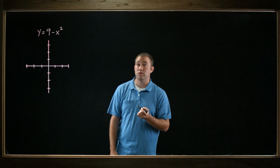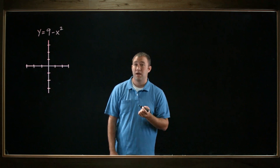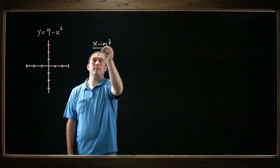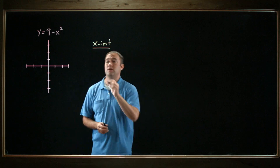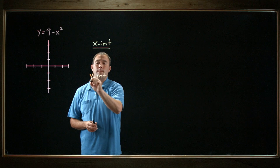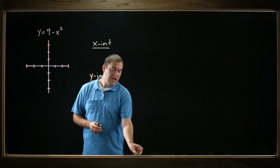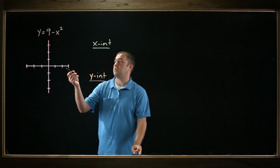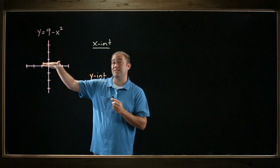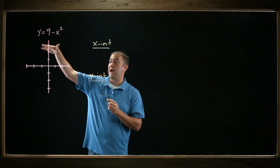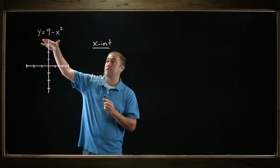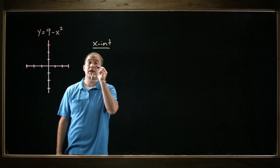The first thing we can do is try to find intercepts — we can try to find the x-intercept and the y-intercept. The x-intercept is where this function hits the x-axis. If it hits the x-axis, then y is equal to 0. So all I do is take this and replace y with 0 and see what I get.